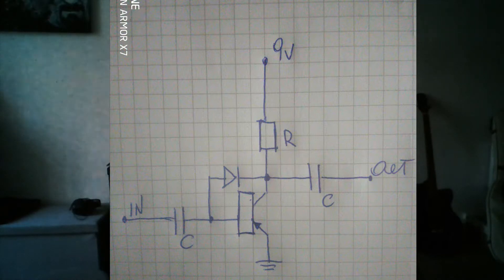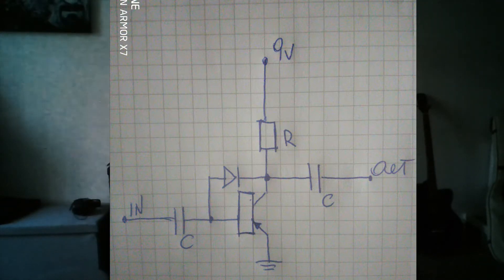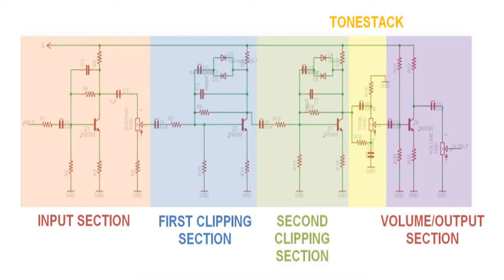From the transistor and the diode, the overall signal passes through another capacitor, which is also responsible for the bass sound of the signal, and then goes to the output. On this next picture you can see a Big Muff circuit analysis, which is a bit more complicated than the one I showed you previously.